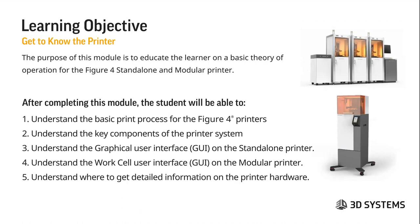The goals for this module are that the student will be able to understand the basic print process for a DLP printer, understand the key components of the printer system, understand the graphical user interface on the standalone printer, understand the work cell user interface or the controller interface on the modular printer, and understand where to get detailed information on the printer hardware.